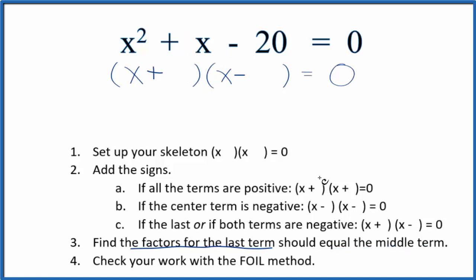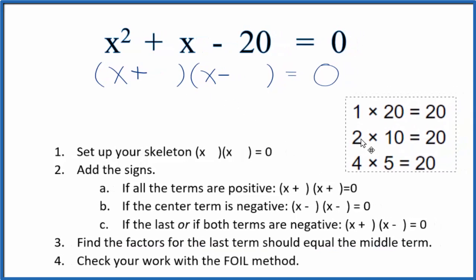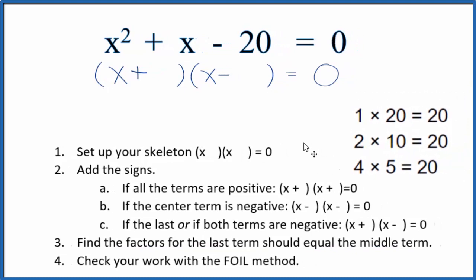The factors for 20 are right here. We're looking for something that gives us -20 but adds up to 1. If we had -5, 4 times -5 is -20, and -5 plus 4 gives us -1, so that doesn't work.